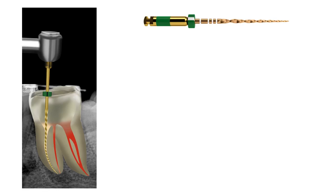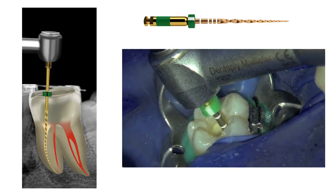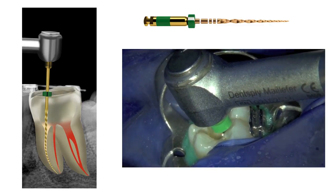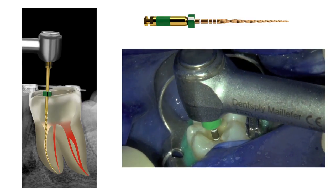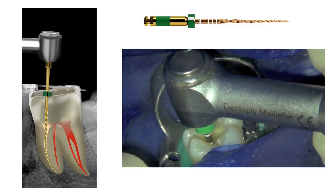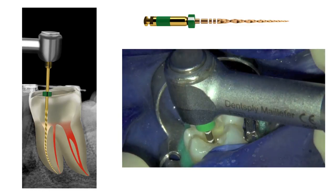A size medium WaveOne Gold reciprocating file was selected for root canal preparation, taking into account the size of the root canals. The access cavity was filled with 3.5% sodium hypochlorite and here you can see the preparation of the mesiobuccal and the mesiolingual root canals using the single WaveOne Gold reciprocating instrument.